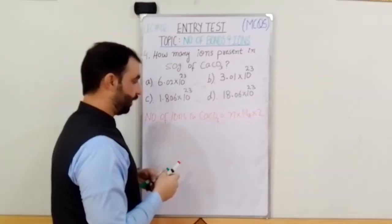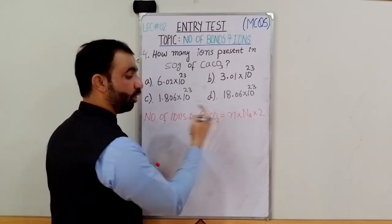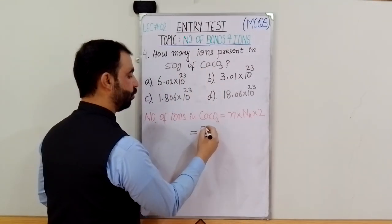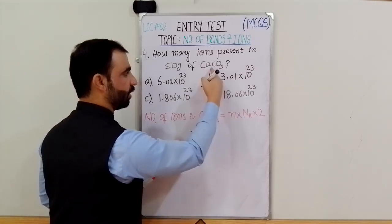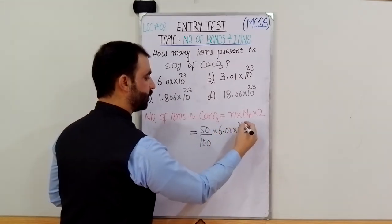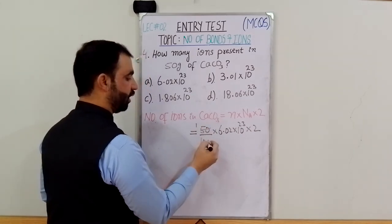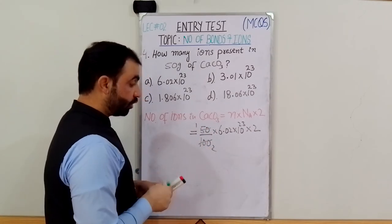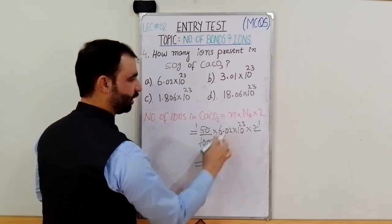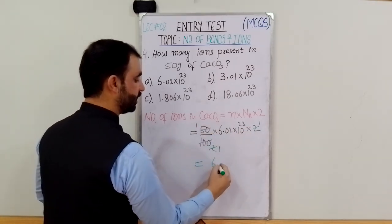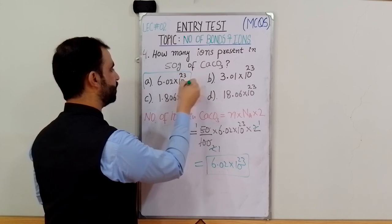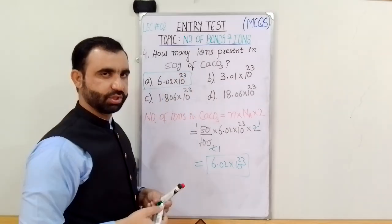Calcium carbonate gives 2 ions. The given amount is 50 grams and the molar mass is 100 grams. So moles = 50 ÷ 100 = 0.5 moles. Then: 0.5 × 6.02×10²³ × 2 = 6.02×10²³.